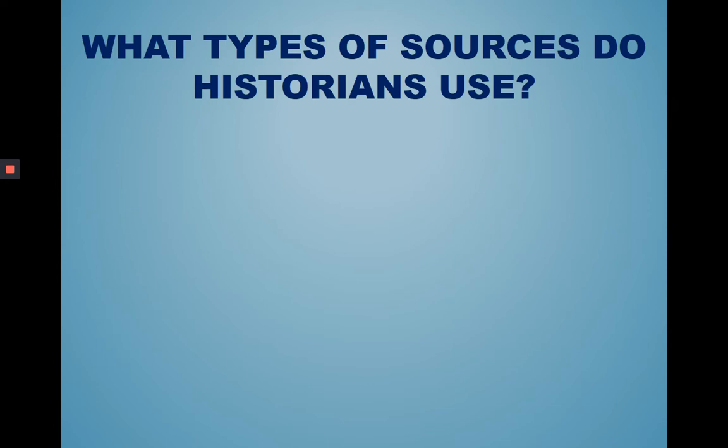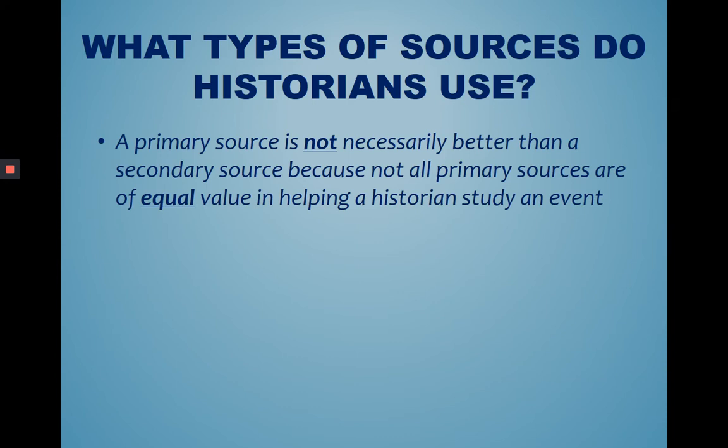Continuing with that conversation today, one downfall of primary sources is that they are not necessarily better than secondary sources, because not all primary sources are of equal value in helping a historian study an event. For example, if you want to know what a soldier's life was like during the American Revolution, a diary from a woman staying at home with the kids is not going to be as helpful to you, even though it's a primary source.